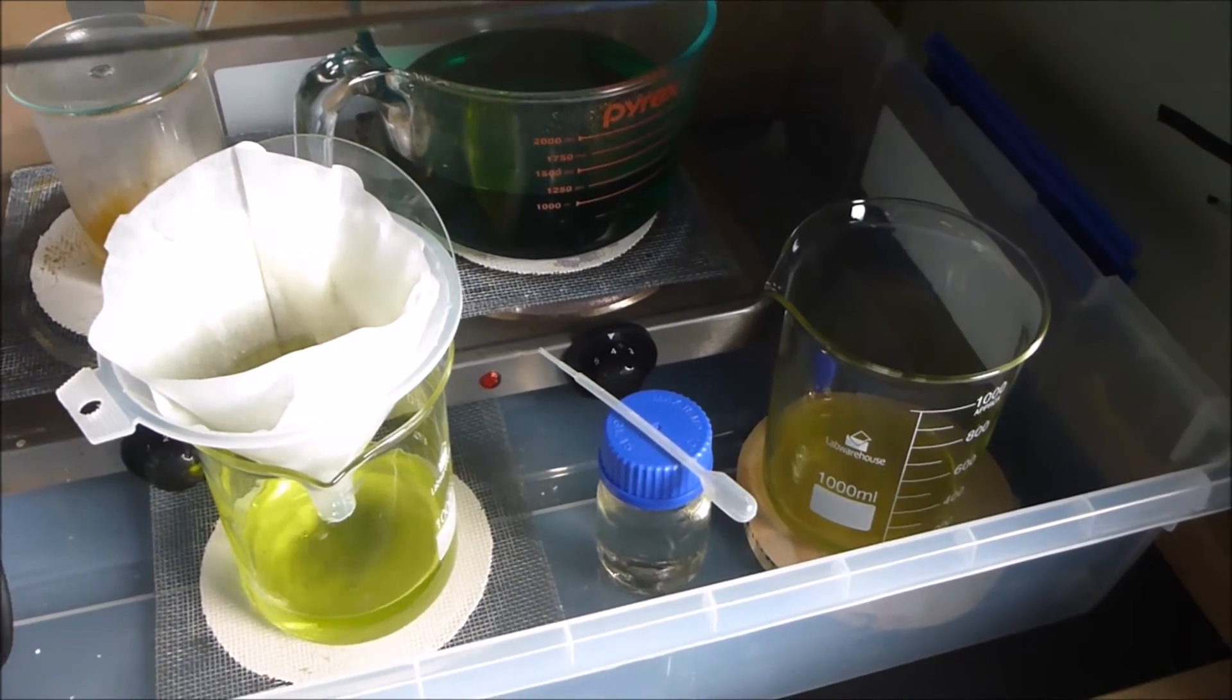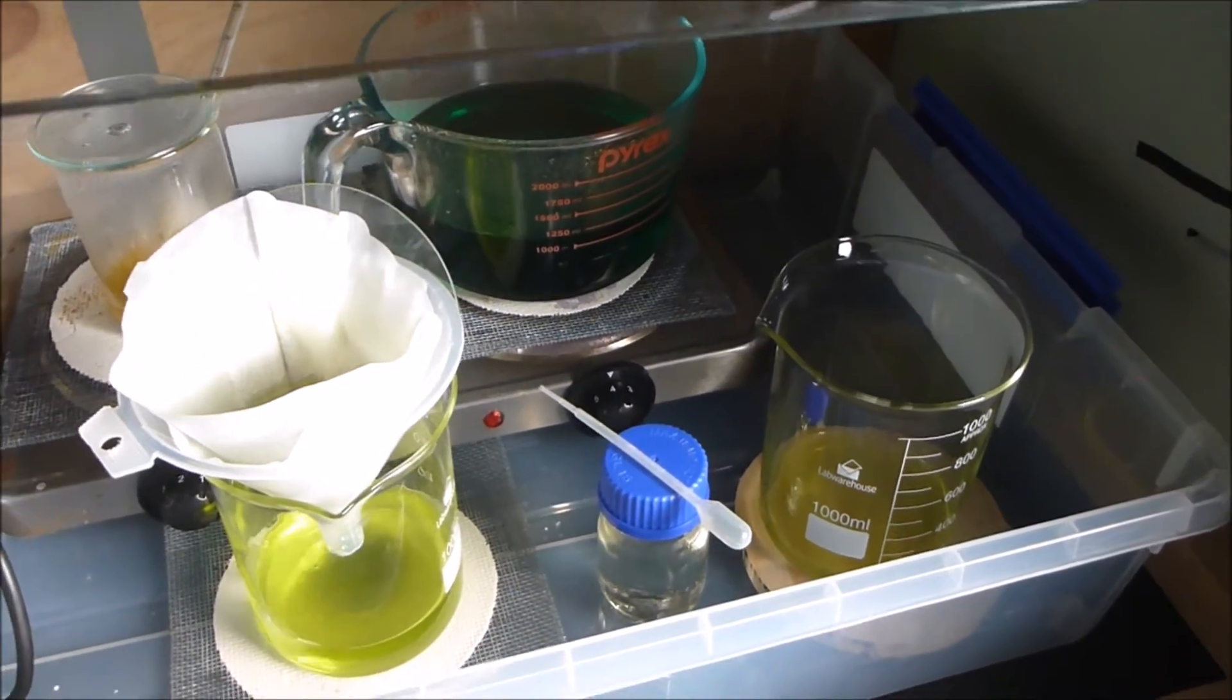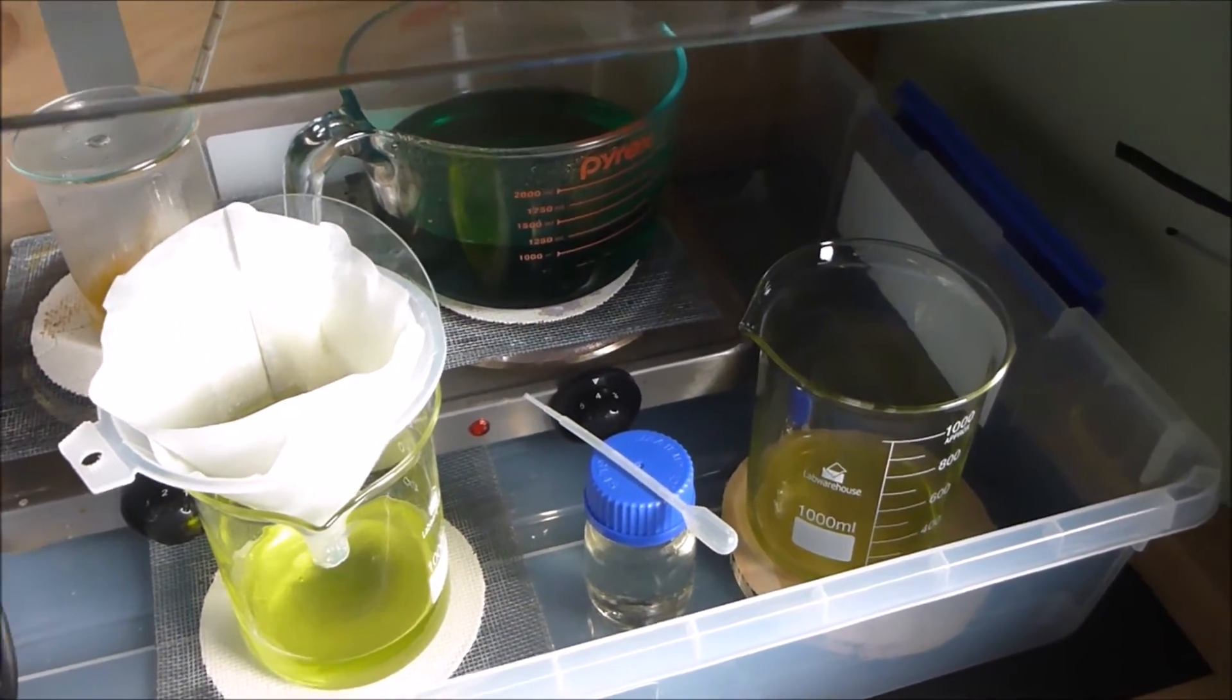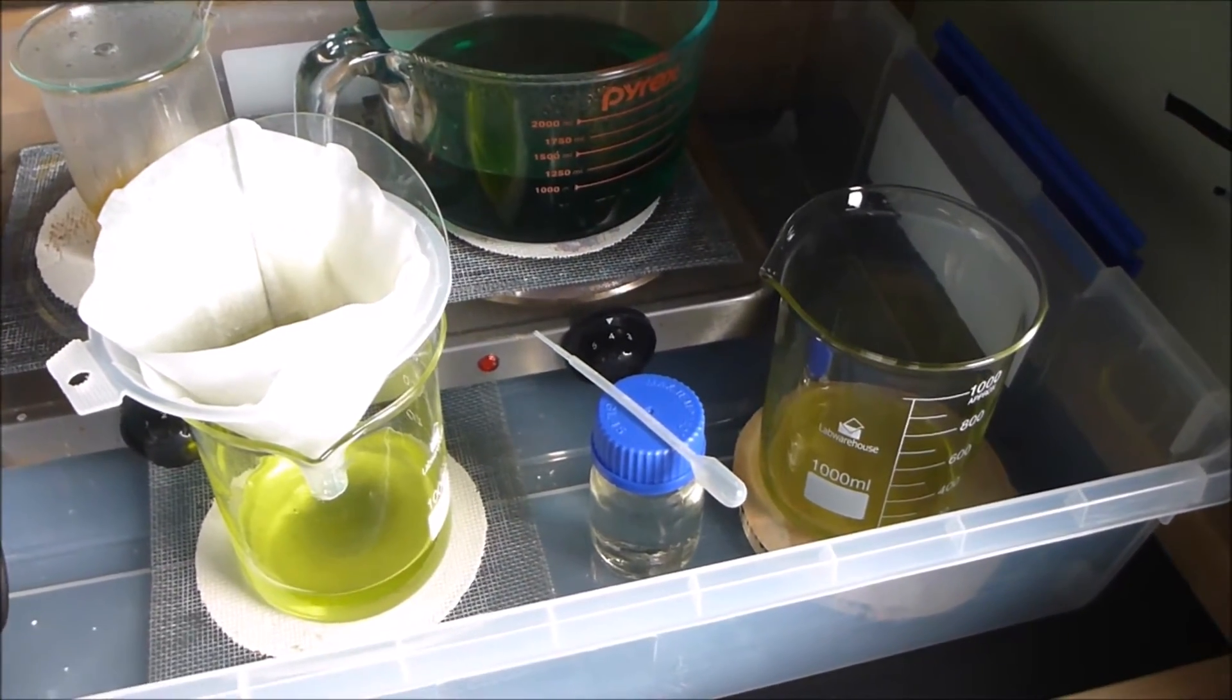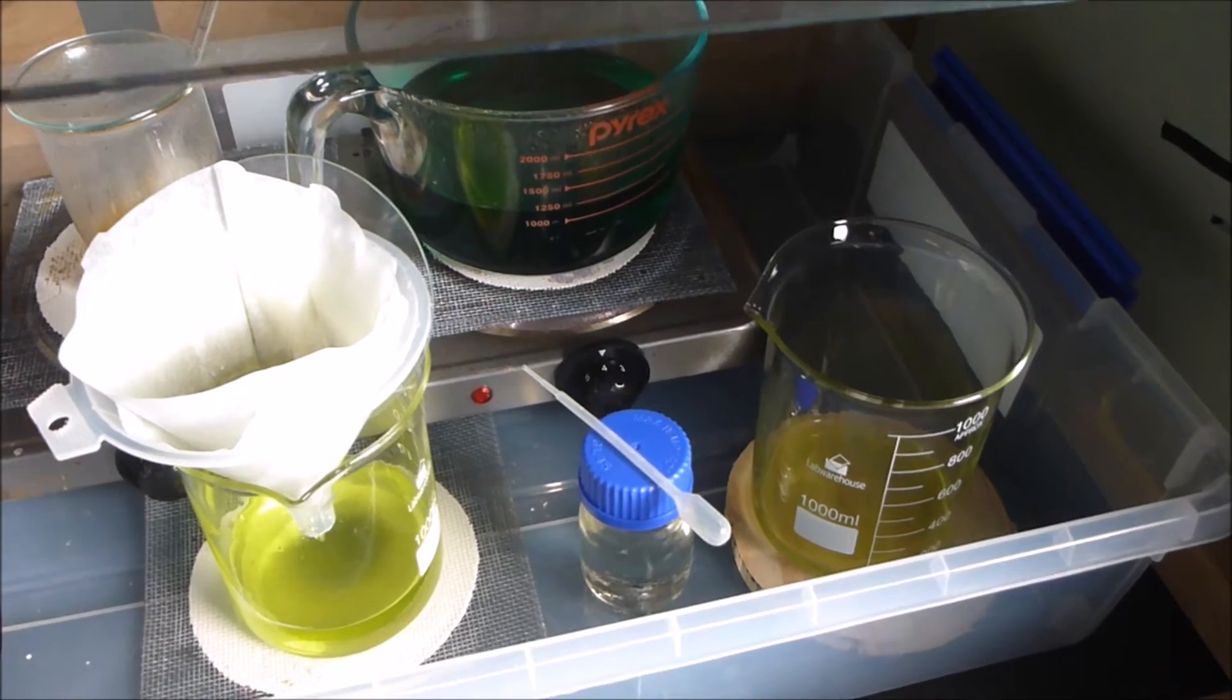Before you precipitate the gold, there has to be a lot of water in the solution for the sodium metabisulfite to work properly - to react with the hydrochloric acid and give you the sulfur dioxide you want.